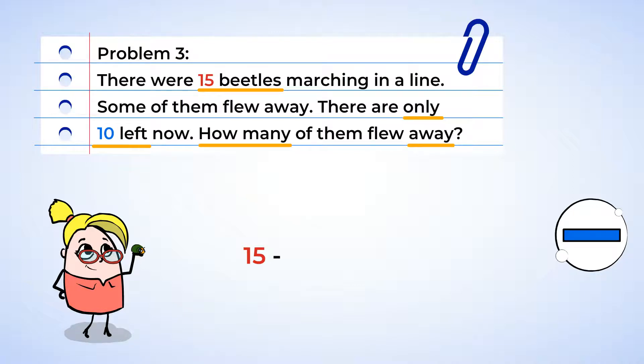However, we don't know the next number. We have the number ten, but that's just how many beetles are still here. That's the answer. So what can we do? Just like before, we can use a question mark in its place. Next, we write the equal sign, and the number of beetles that are left, ten. So let's read our subtraction sentence. Fifteen minus what number equals ten?